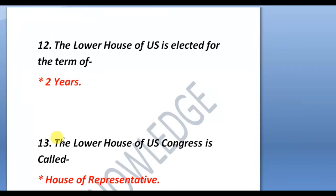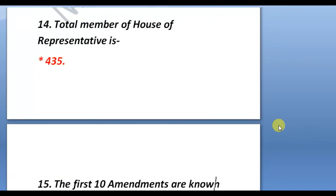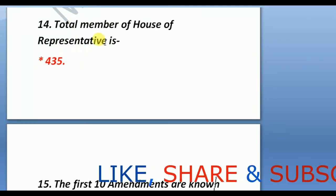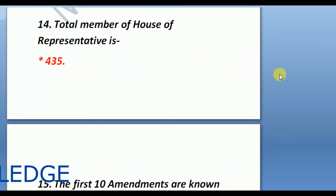If you compare them with each other, it will be easier to remember the questions and answers. The lower house is called the House of Representatives and the upper house is called the Senate. The upper house is elected for six years and the lower house for two years. The total members of the House of Representatives is 435, and the upper house has 100 members.